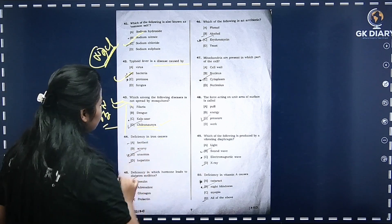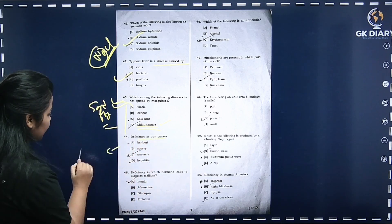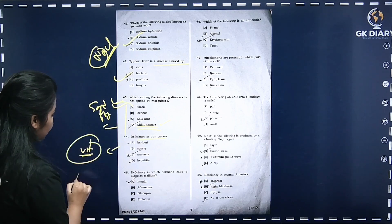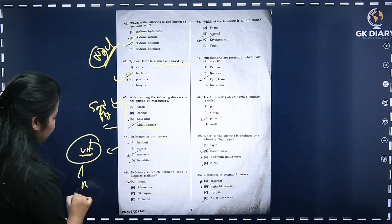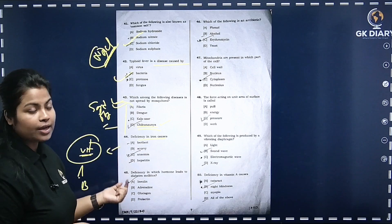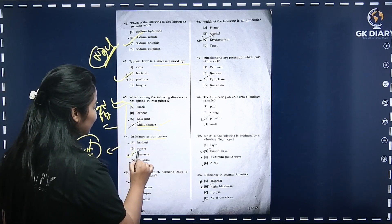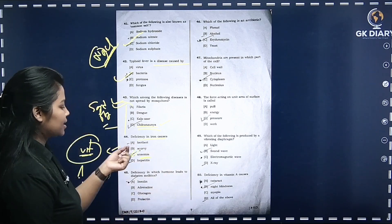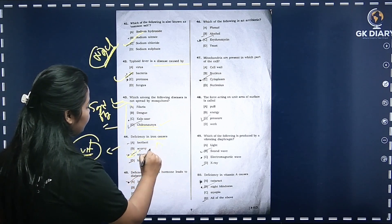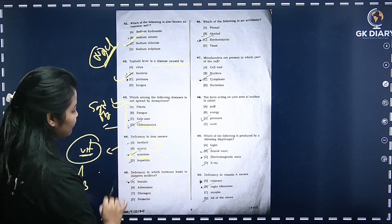Deficiency in iron causes anemia. Option C is correct. Beriberi is caused by deficiency of vitamin B. Scurvy is caused by deficiency of vitamin C.